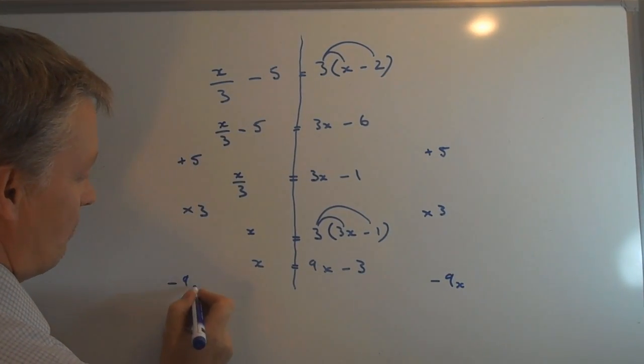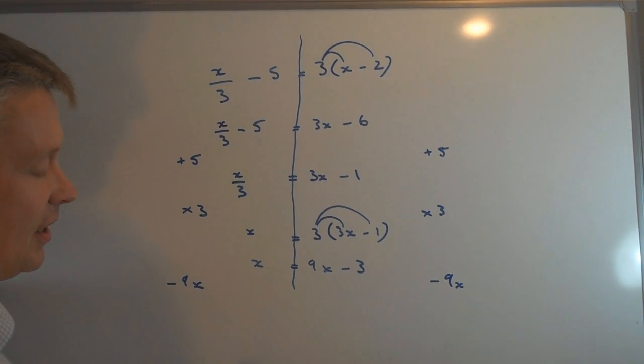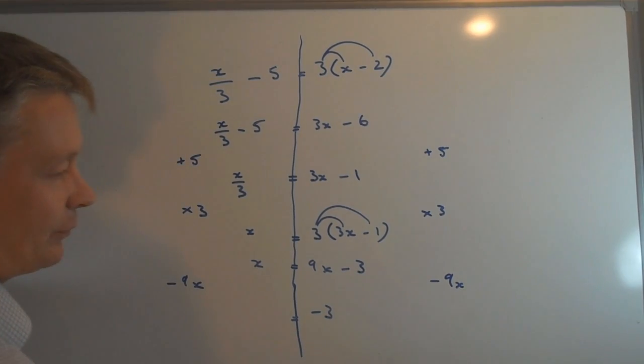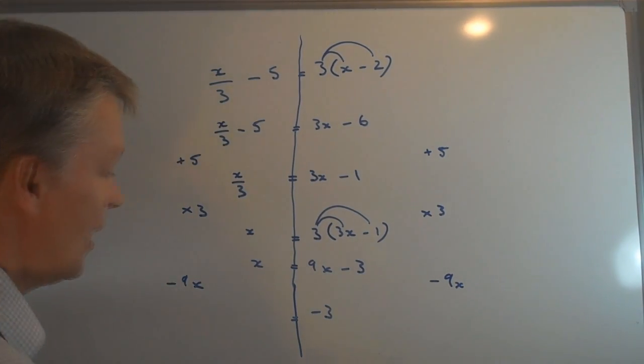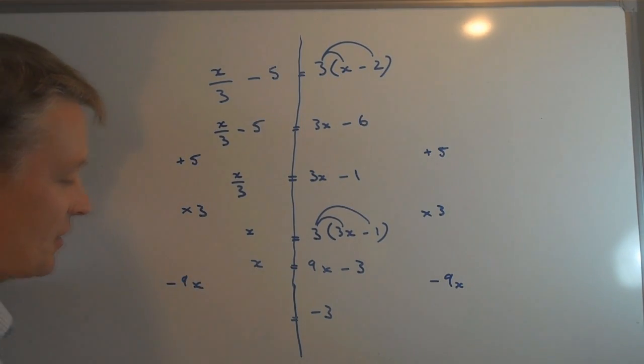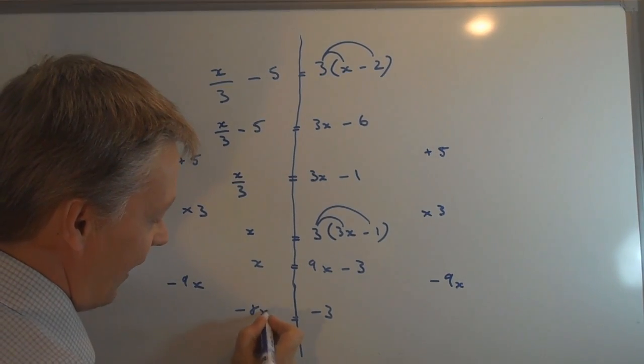So I've got minus 9x and minus 9x. On this side I'm going to be left with minus 3 because 9x minus 9x is 0. And on this side I'm going to be left with x minus 9x is minus 8x.